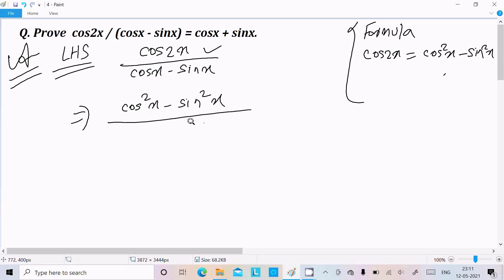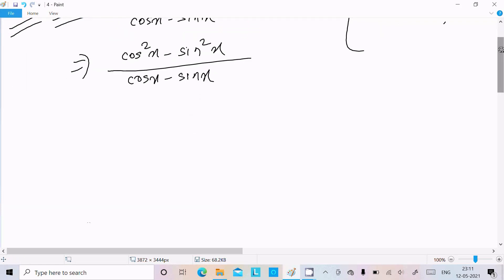So we have cos squared x minus sin squared x divided by cosx minus sinx. Now if you assume this one, we can write cosx whole square minus sinx whole square.